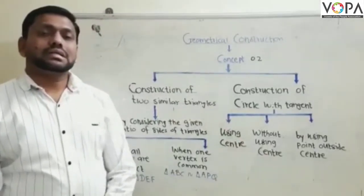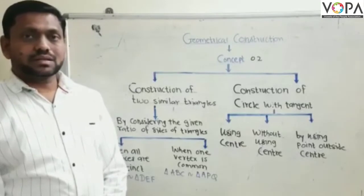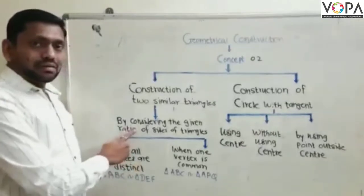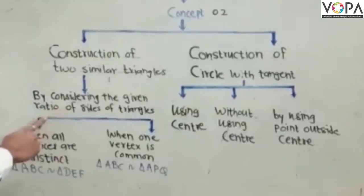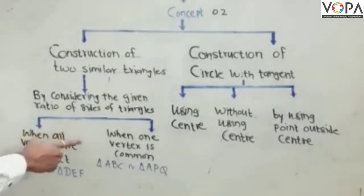When we draw the construction of two similar triangles, then this construction is based on considering the given ratio of the size of the triangle. In this situation, we use two different conditions.